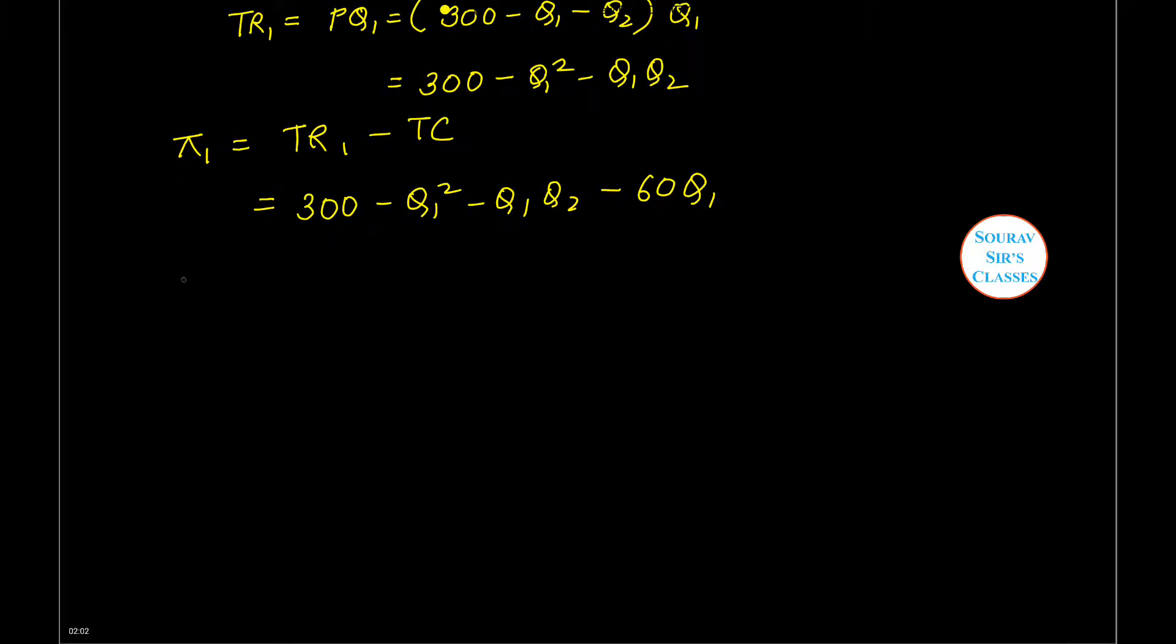So now we will find out the first order derivative and set it equal to zero. First order condition: derivative of profit function with respect to Q1 holding Q2 constant. Here it will be 300Q1, which I skipped initially.